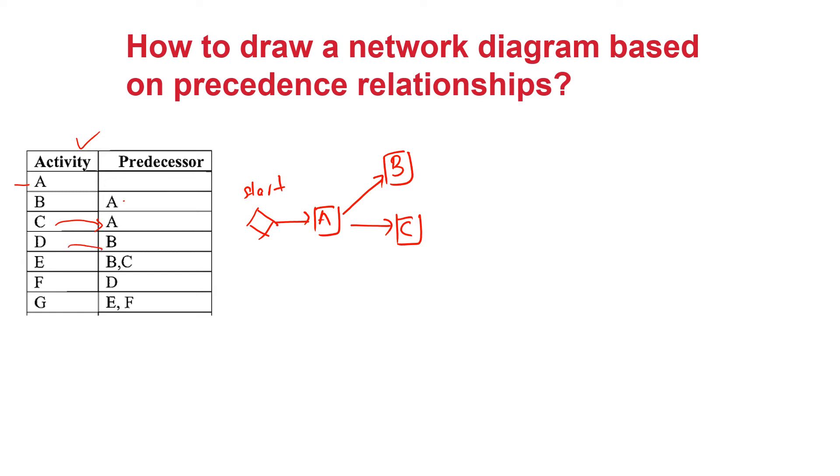Now if you look D has a predecessor B which would indicate through this finish to start arrow. We must finish B before we could start work on D. And E here in this instance has got two predecessors as you could see depending on B and C. So E would depend not only on B but also on C.